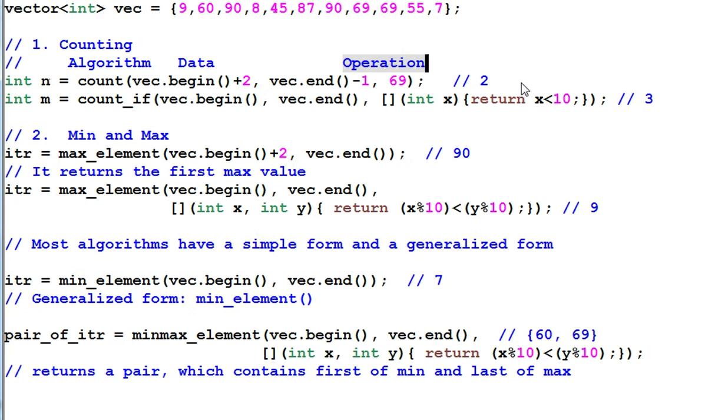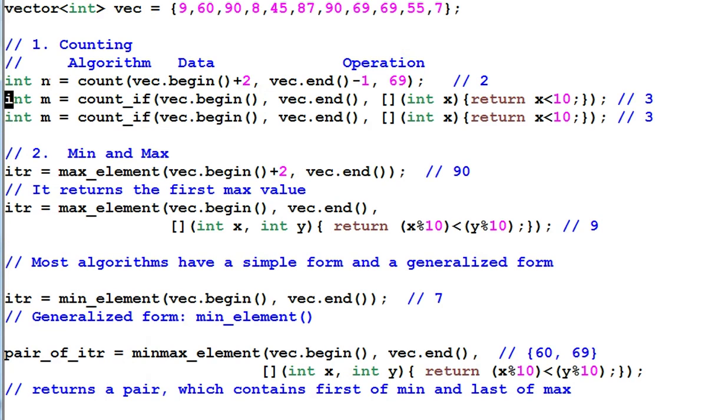Another thing to note is the count function only allows me to specify a number. That is because it's using the default comparison operation of equal. I can do the same thing with the countif. This will also count the number of items that equal to 69.